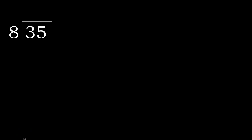35 divided by 8. 3 is less, therefore next. 35 is not less, therefore with 35 — 8 multiplied by which number is nearest to 35 but not greater?